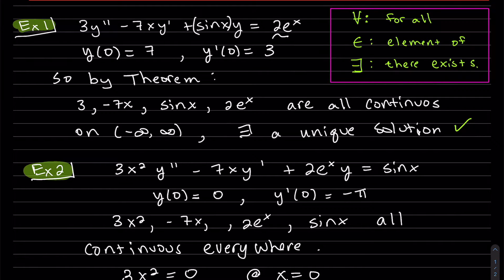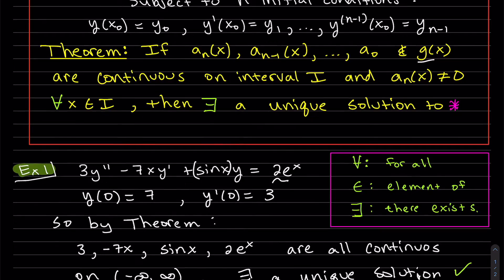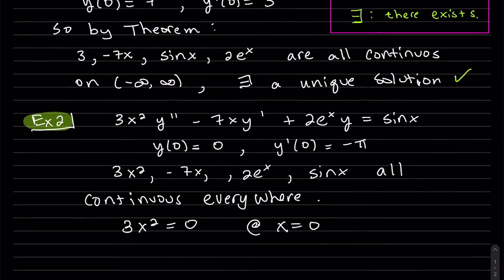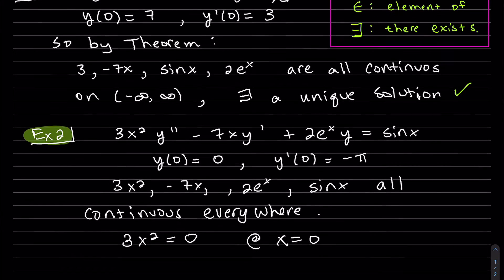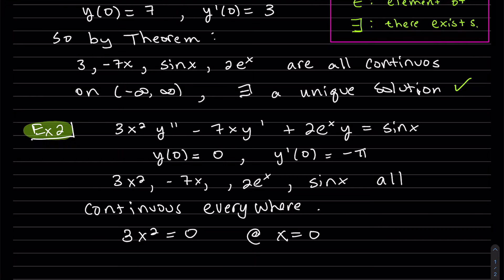Now, I forgot to point that out on the last example. But here it's 3. 3 is a constant. That constant is never going to equal 0. So we did satisfy that second condition on the theorem. So here now we have 3x squared, and we can see I can plug in x equals 0. So it is 0 at some value of x on that interval. So the conclusion is there's just no guarantee of a unique solution.